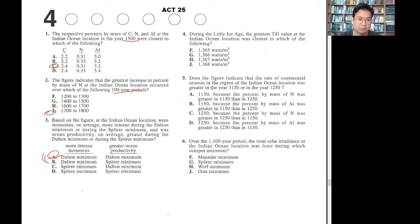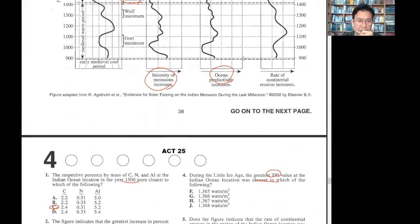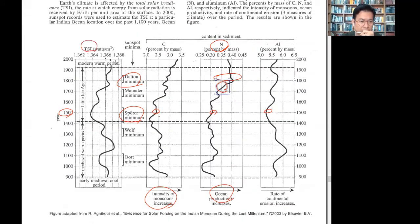Number four. During the little ice age, what was the TSI value? TSI, the latest is this one or this one. And then that number is 1367.